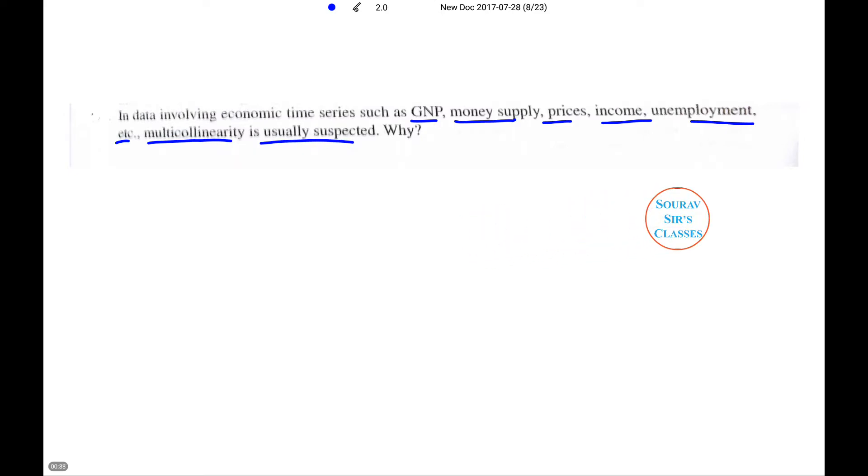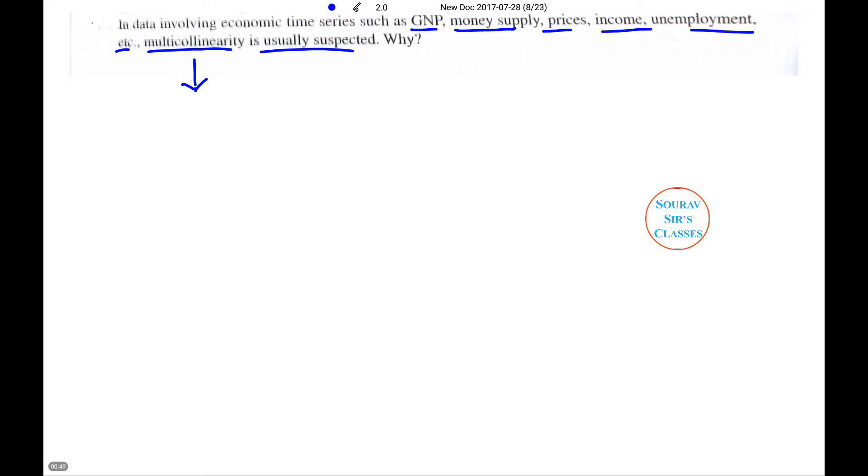Before answering the question, let us understand what we mean by multicollinearity. The word multicollinearity means that two or more regressors are highly correlated. That means if there are two regressors x1 and x2, then x1 can be linearly predicted from x2 with a substantial degree of accuracy.